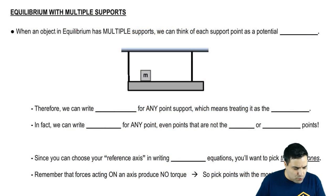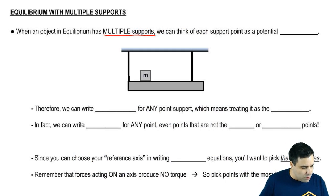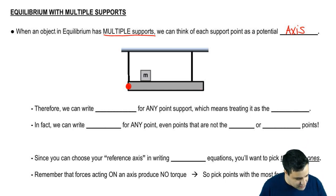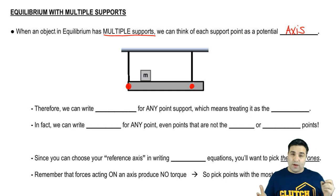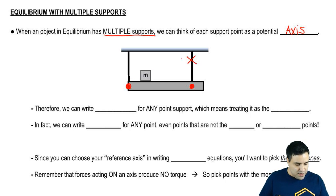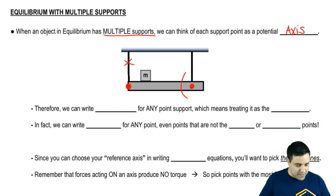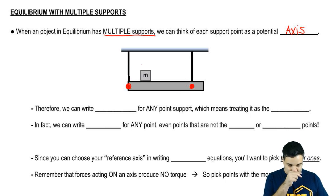When an object in equilibrium has multiple supports, such as here with two ropes, we can think of each support as a potential axis of rotation. One way to visualize this is: imagine that if you cut one rope, the bar is going to spin around the point where the other rope touches, and vice versa.